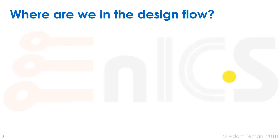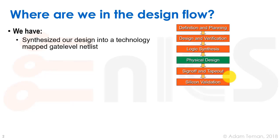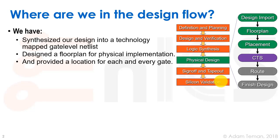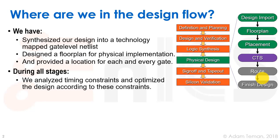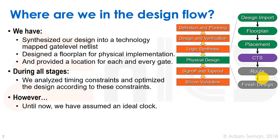As a reminder of where we are in the design flow: this is our whole design flow, from design and planning all the way down to sign-off, tape-out, and finally physical validation. We've synthesized our design into a technology-mapped gate-level netlist, then designed a floor plan and provided a location for each gate through placement. During all stages, we analyze timing constraints and optimize the design. However, until now, we have assumed an ideal clock.